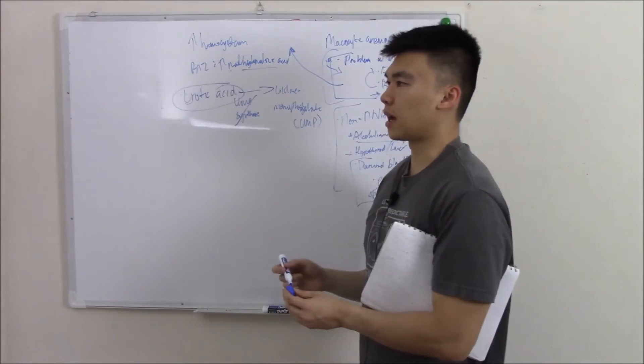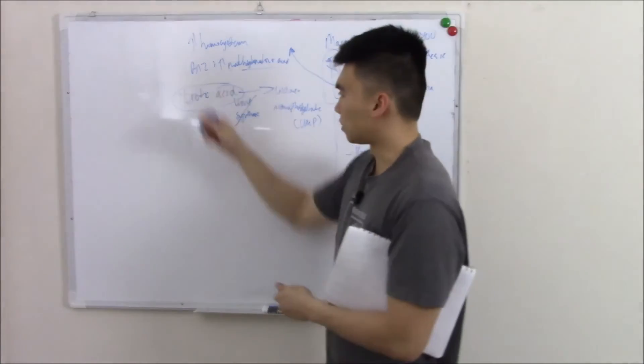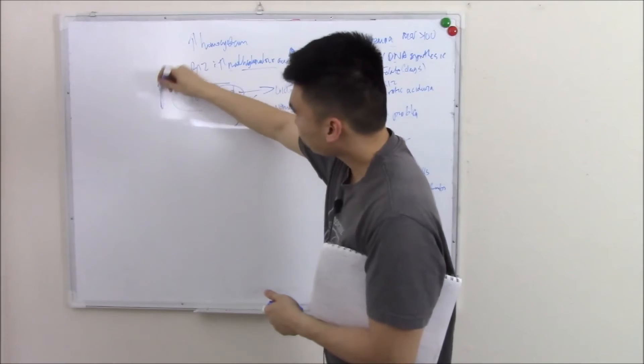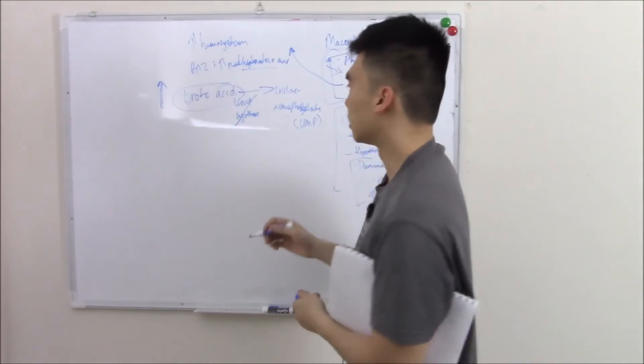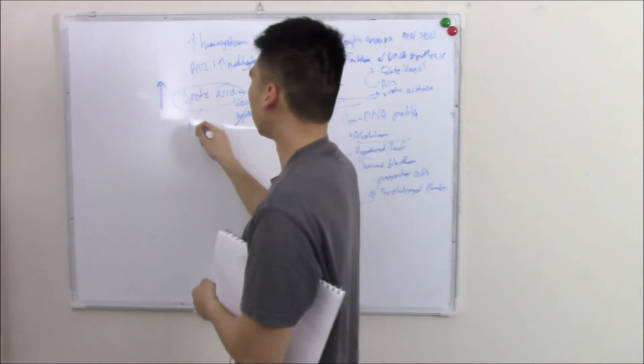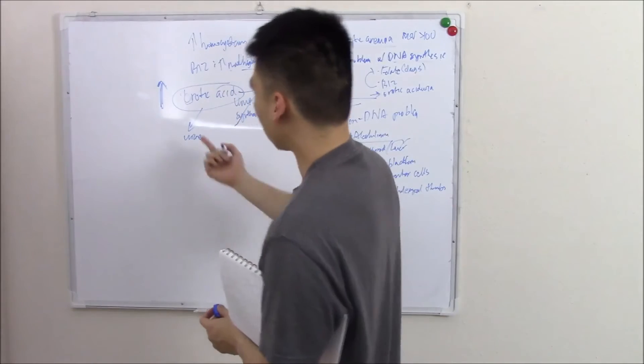If you have a deficiency in this enzyme, then your orotic acid can't move on the pathway and will start to build up. Not only that, you're gonna have problems with your DNA synthesis and that's what causes anemia. But orotic acid itself is pretty toxic and will start to build up. How you diagnose it is by looking at this in the urine.